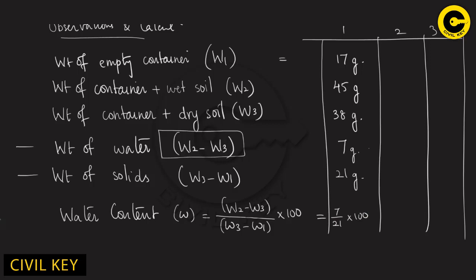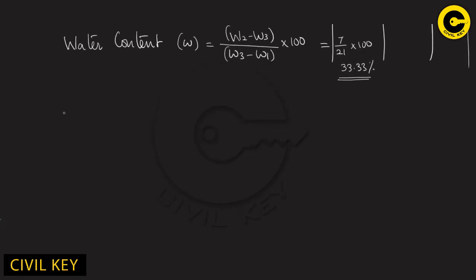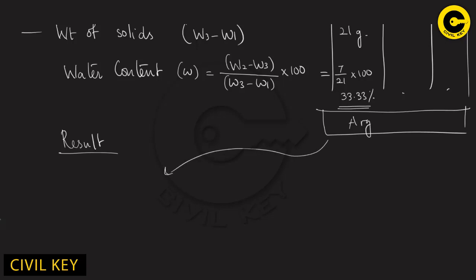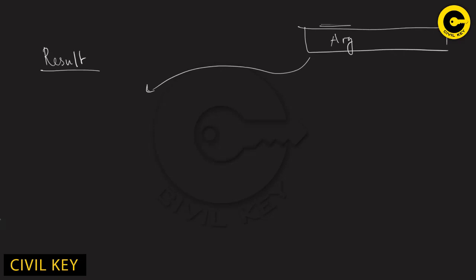We have 3 data points for the sample calculation. Here is the sample calculation and the result. You can mark the result — the water content of the given soil sample is the calculated value. If you don't have a sample, you can still use the result from the procedure.